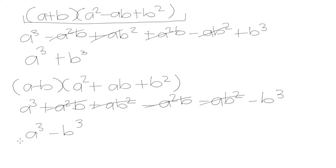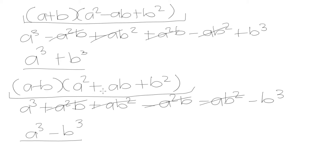This is a difference of two cubes, while the earlier result was a sum of two cubes. Whenever we have an expression that is either the sum or difference of two cubes, we have a useful way to factor those expressions using these factored forms. These are two very important formulas that you'll need to memorize. Fortunately, they're very similar — the only difference between the two equations is the first sign and the second sign; everything else is exactly the same.